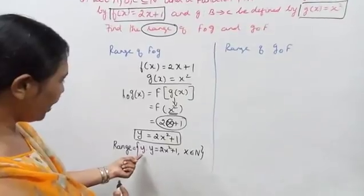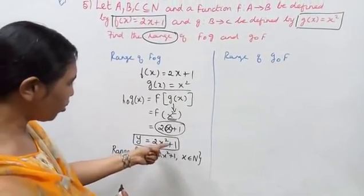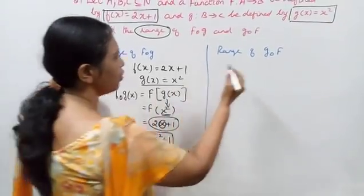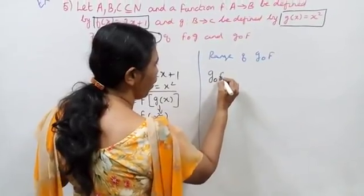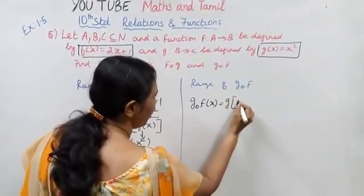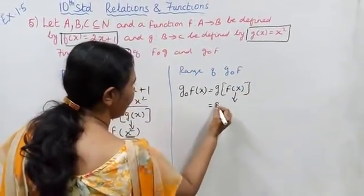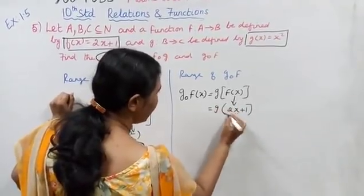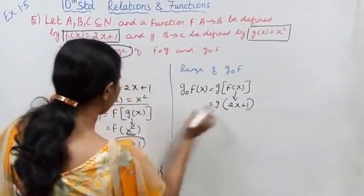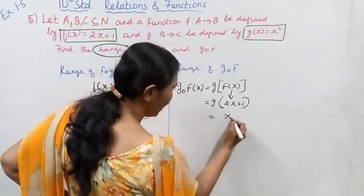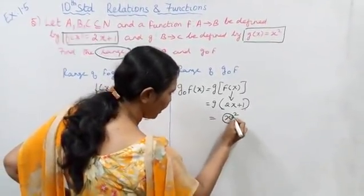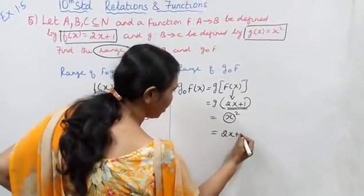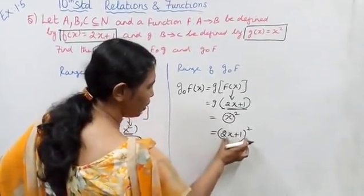Before finding the range, the range of f of g of x: y such that y equal to 2x square plus 1, x belongs to N. Now for g of f of x: f of x is 2x plus 1. G of x is x square, so substitute x with 2x plus 1 — the whole square, giving (2x plus 1) the whole square.